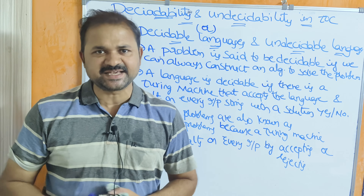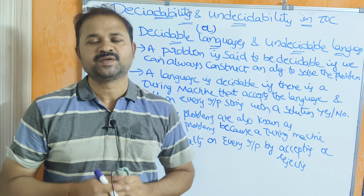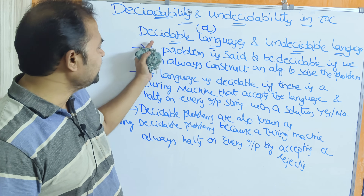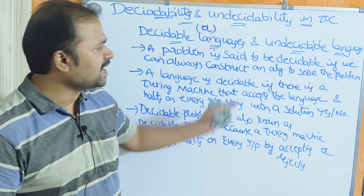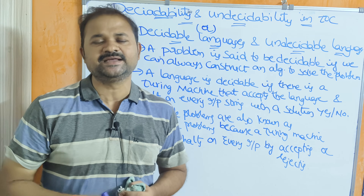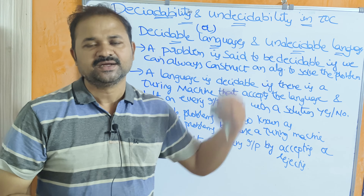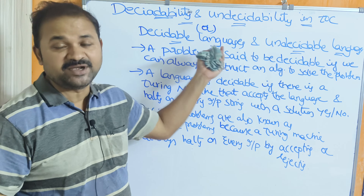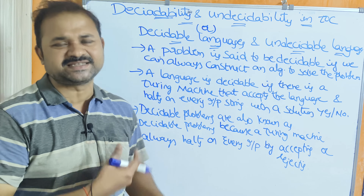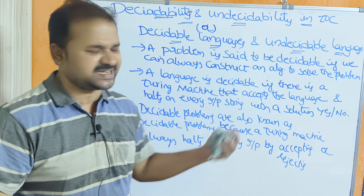Let us discuss decidability and undecidability in theory of computation, also called decidable languages and undecidable languages. This topic is completely theoretical. I will give some important points regarding decidable problems, decidability, as well as undecidability. First, let us see what decidability is.